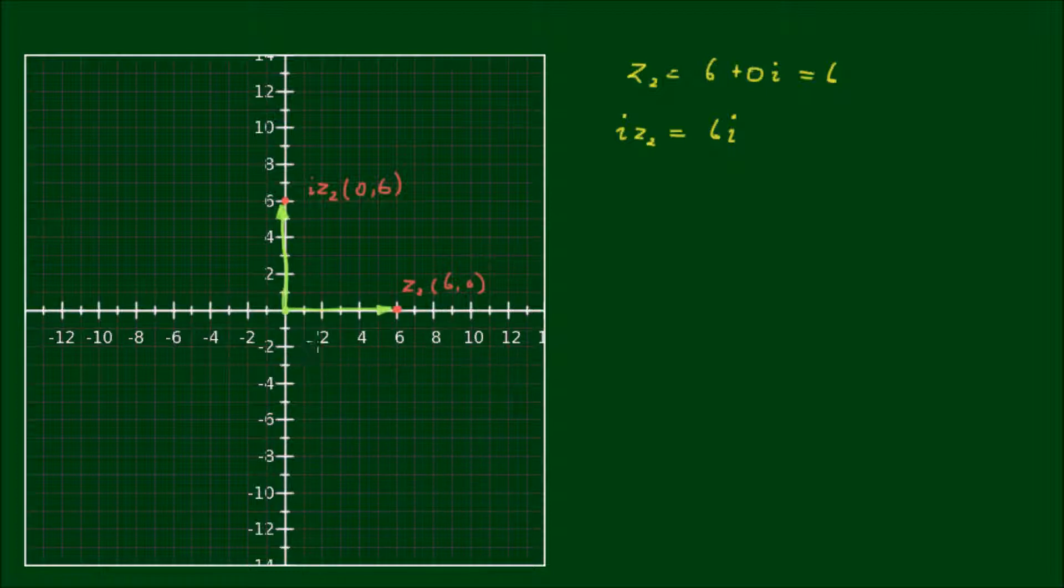So when we have multiplied by i, effectively what we have done is rotated the original vector anticlockwise by 90 degrees.